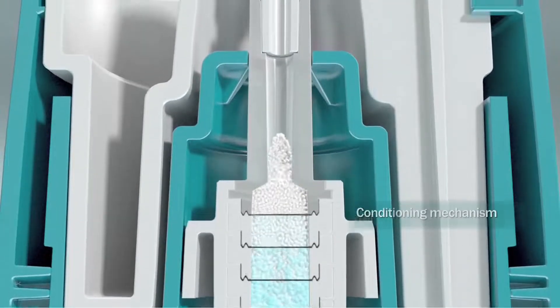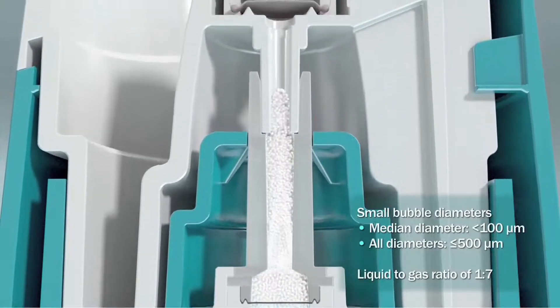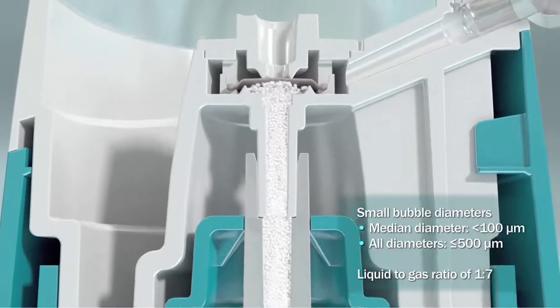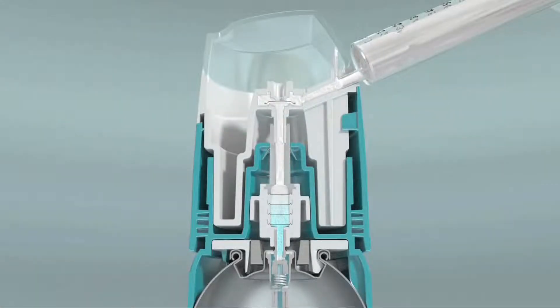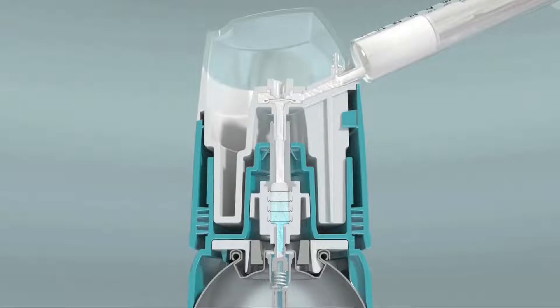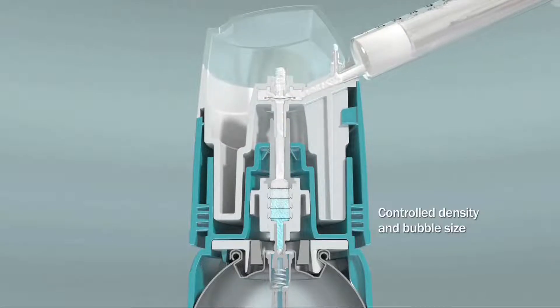This ensures that the median bubble diameter is less than 100 microns, with no bubbles greater than 500 microns. The resulting microfoam, when generated following the instructions for use, is a cohesive low-nitrogen injectable microfoam with controlled density and bubble size.